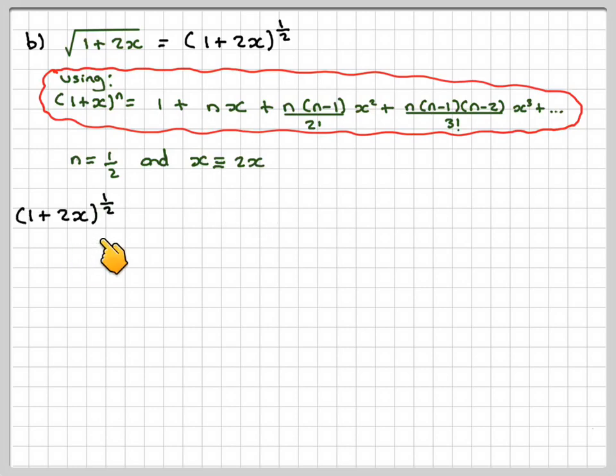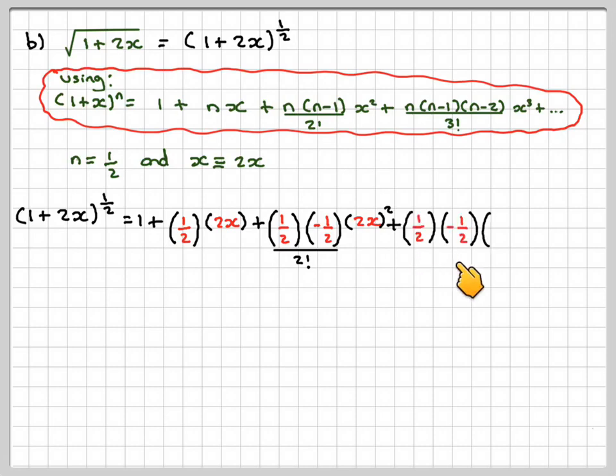So substituting in, we have (1 + 2x)^(1/2) equals 1 + n, which is a half, times my x, which in this case is going to be 2x, plus (1/2)(-1/2)/2! times (2x)², be careful how you use your brackets. Next one will be (1/2)(-1/2)(-3/2)/3! times (2x)³.